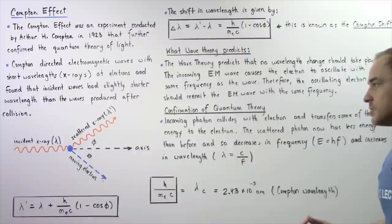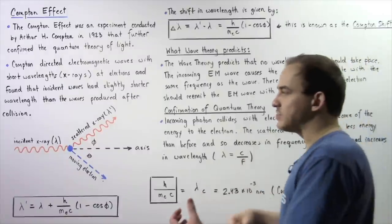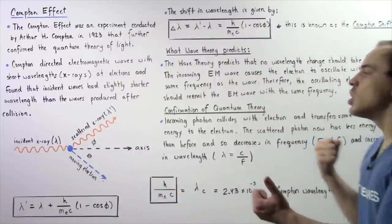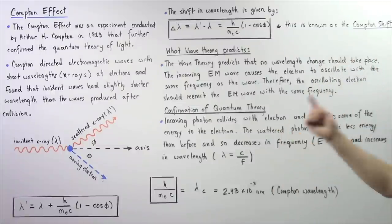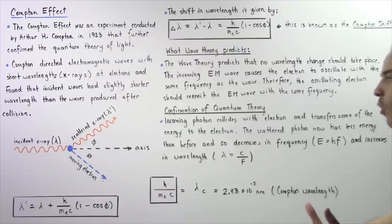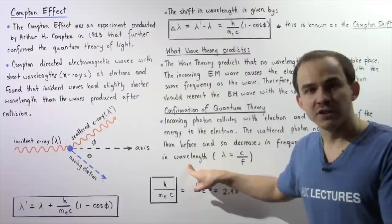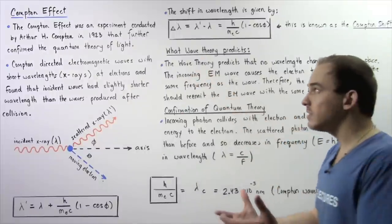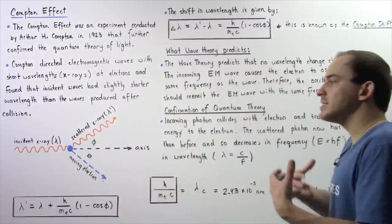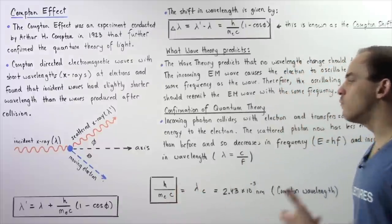The fact that light consisted of photons means the incoming photon collides with the stationary electron, and that collision transfers some of that energy within the photon to the electron. The electron gains kinetic energy and begins to move with some velocity. The scattered photon now has less energy than before, and because energy depends on frequency, less energy means a smaller frequency. A smaller frequency means a greater wavelength, which is exactly why a change in wavelength takes place.